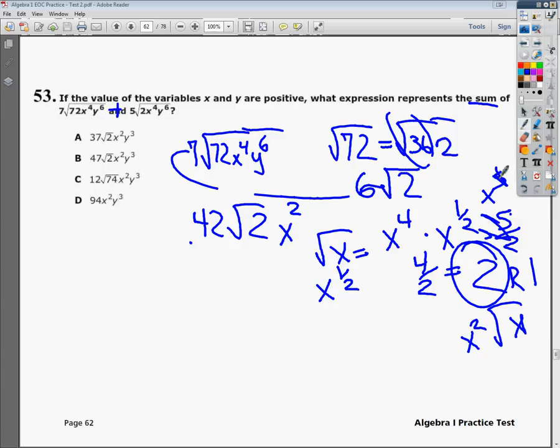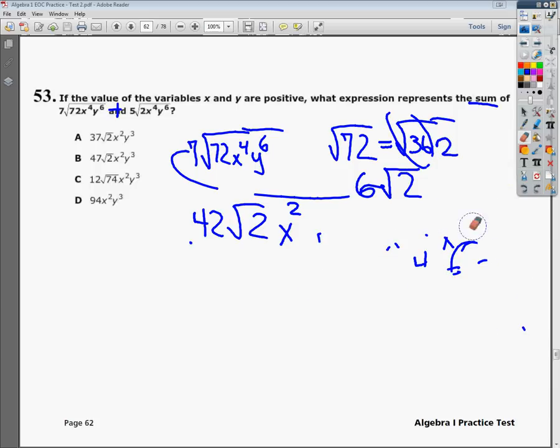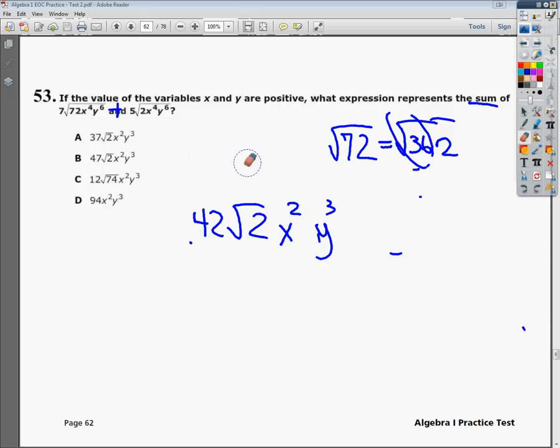Let's do the y to the 6th. When I'm dealing with y to the 6th, I'm going to do 6 divided by 2, which is y to the 3rd. It essentially eliminates the square root for the variables altogether. That's a good thing.